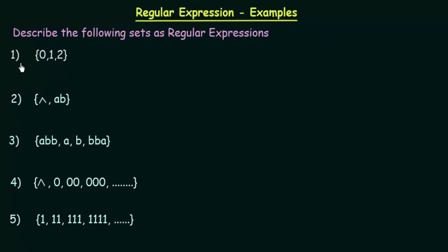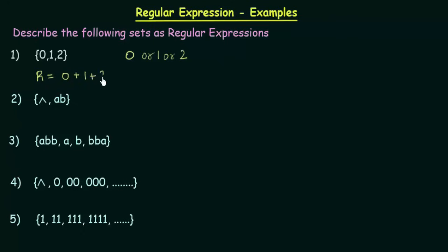Let's see the first one. The first set contains the symbols 0, 1, and 2. That means it could contain anything from 0 or 1 or 2 — these are the things that can be contained in this set. In the form of a regular expression it can be written like this: R = 0 + 1 + 2. This plus symbol is used to denote 'or', so 0 or 1 or 2.